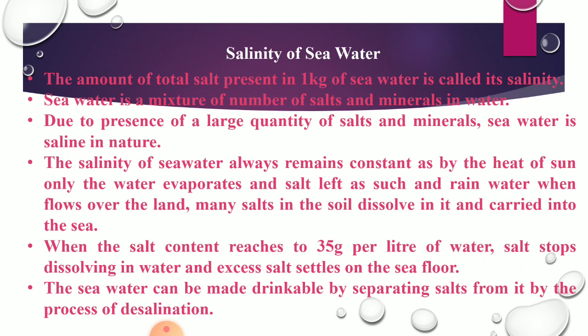However, the salinity of sea water always remains constant. When the concentration of salt reaches 35 grams per liter of water, salt stops dissolving and the excess settles on the sea floor. Because sea water is salty it cannot be used for drinking, agriculture, or industry. To make it potable, dissolved salts are separated from it — this process is called desalination.